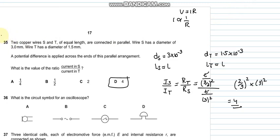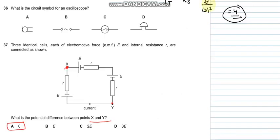For question number 35, it says to find the current in S over current in T. We are given the parameters. We just need to see that it's an inverse proportion, so we can find it by doing the given calculations and the answer would be 4, so it's D. The symbol for oscilloscope is C.